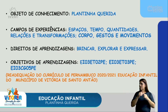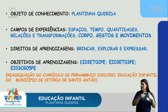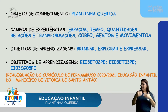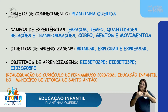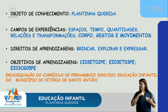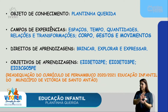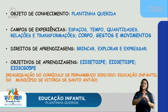Objeto de conhecimento: Plantinha Querida. Campos de experiências: espaços, tempo, quantidades, relações e transformações. Corpos, gestos e movimentos. Direitos de aprendizagens: brincar, explorar e expressar. Objetivos de aprendizagens. Aqui estão os códigos de acordo com a readequação do Currículo de Pernambuco 2020-2021 da Educação Infantil do Município de Vitória de Santo Antão.